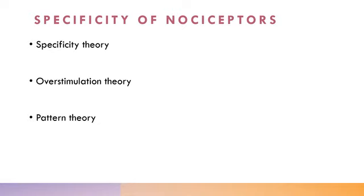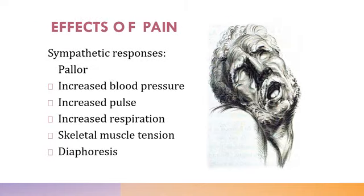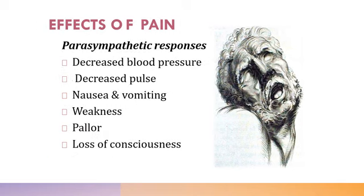The effects of pain involve two components: sympathetic and parasympathetic. Sympathetic responses include pallor, increased blood pressure, increased pulse, increased respiration, skeletal muscle tension, and diaphoresis (excess sweating). Parasympathetic responses include decreased blood pressure, decreased pulse, nausea, vomiting, weakness, pallor, and loss of consciousness. Most of us have experienced some of these symptoms at some point.